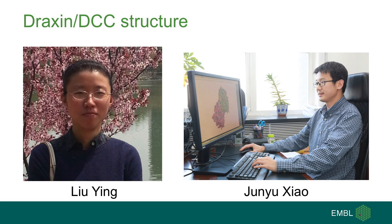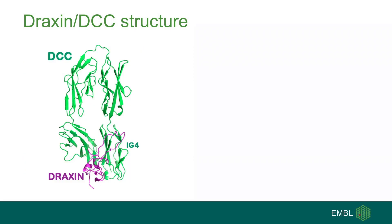Ying Liu at Peking University prepared Draxin to co-crystallize with DCC N-T4IG domains, and with the help from Dr. Junyu Xiao, she solved the structure. Only the most C-terminal residues of Draxin fold into a cysteine knot-like domain we named Draxin-C, which mainly binds to the IG4 domain of DCC.